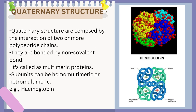The quaternary structure is composed of two or more interacting polypeptide chains. When multiple polypeptide chains fold and interact with each other, they form a highly condensed quaternary structure. These chains are bonded by non-covalent interactions such as van der Waals forces or hydrogen bonds. Quaternary proteins are also called multimeric proteins, and their subunits can be homomultimeric or heteromultimeric. An example is hemoglobin, present in the blood.